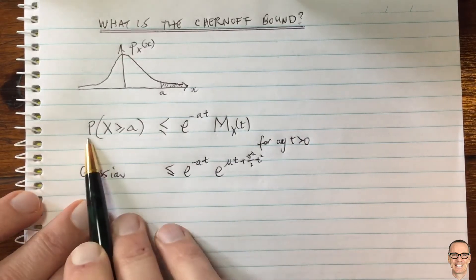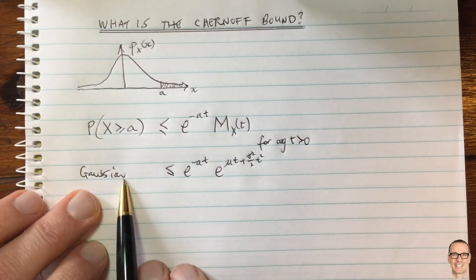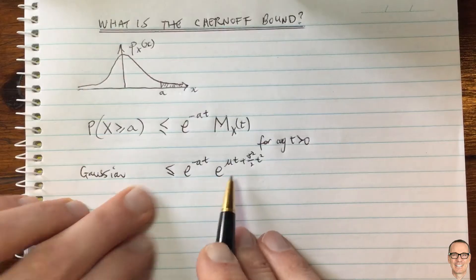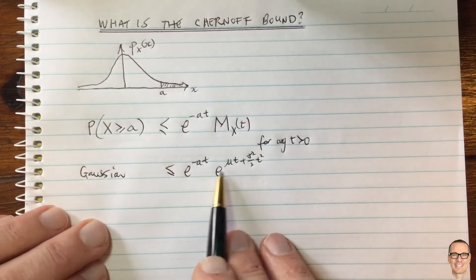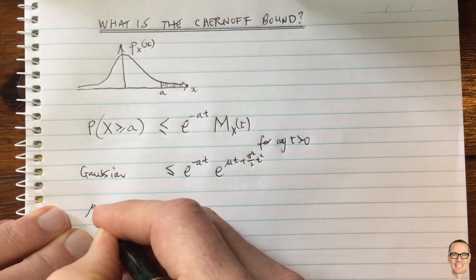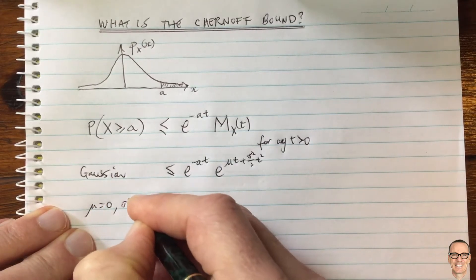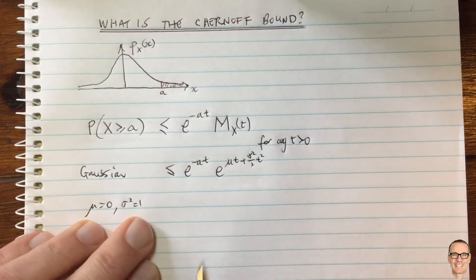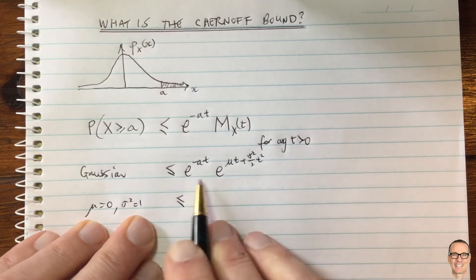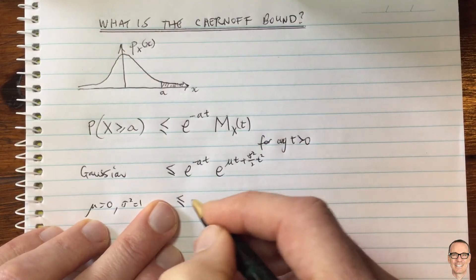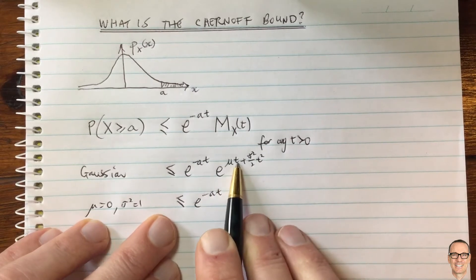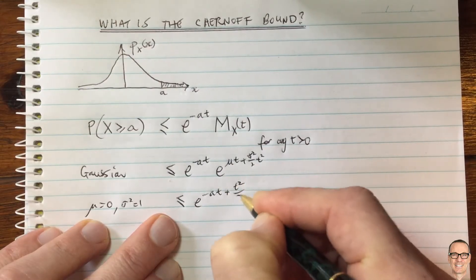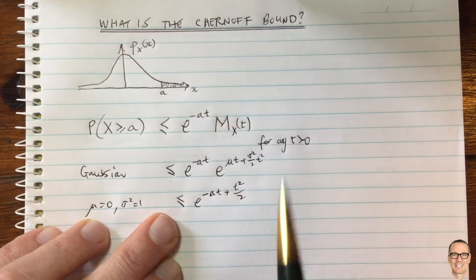This is the Chernoff bound for a Gaussian — it gives an equation for the largest value the tail probability could be. Let's look at the specific case where the mean is zero and the variance equals one, often called the standard normal or unit normal. In this case the mean term drops out and sigma squared equals one, so we're left with e to the minus at plus t squared divided by two.